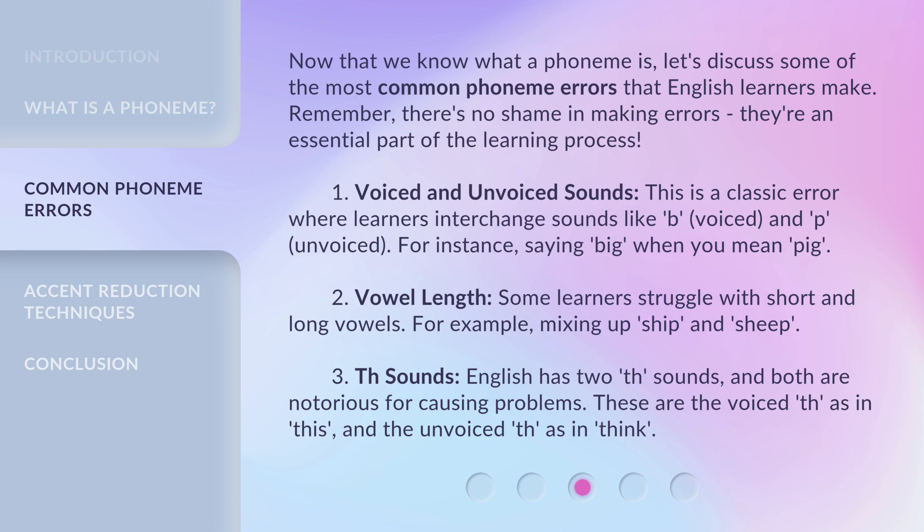1. Voiced and Unvoiced Sounds. This is a classic error where learners interchange sounds like 'b' (voiced) and 'p' (unvoiced). For instance, saying 'big' when you mean 'pig.'